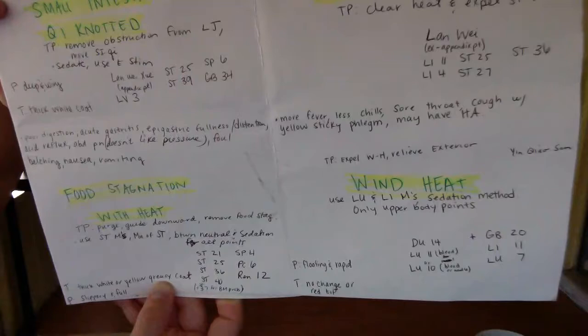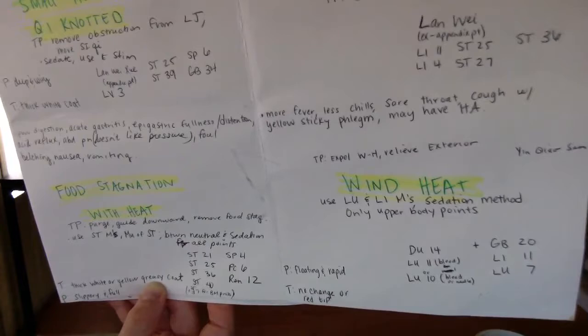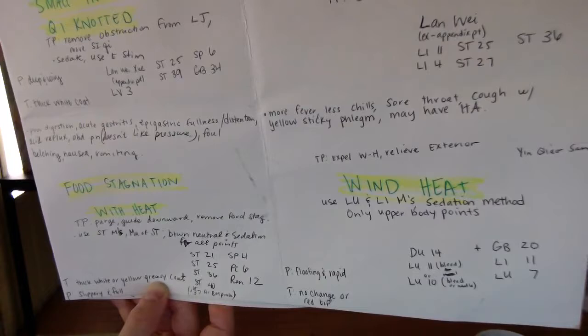Points combo for food stagnation with heat: Stomach 21, stomach 25, stomach 36, stomach 40, spleen 4, pericardium 6, REN 12. And down here it says you use stomach 37 if they have bowel movement problems.